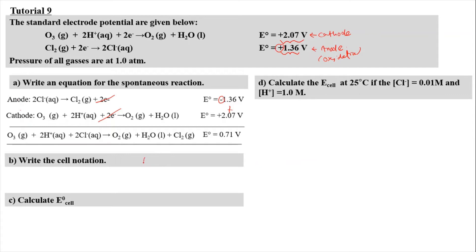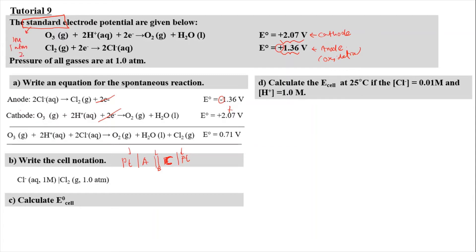The cell notation format places the reaction at anode on the left, then a double bridge, then the reaction at cathode. We apply the A, B, C rule, and if the reaction has an inert electrode, we need to put platinum on the left and right-hand sides. For the reaction at anode, chloride ions form chlorine gas: aqueous into gas, at concentration 1 molar and 1 atm. This is because it is at standard electrode potential, which occurs at 1 molar, 1 atm, and 25 degrees Celsius.